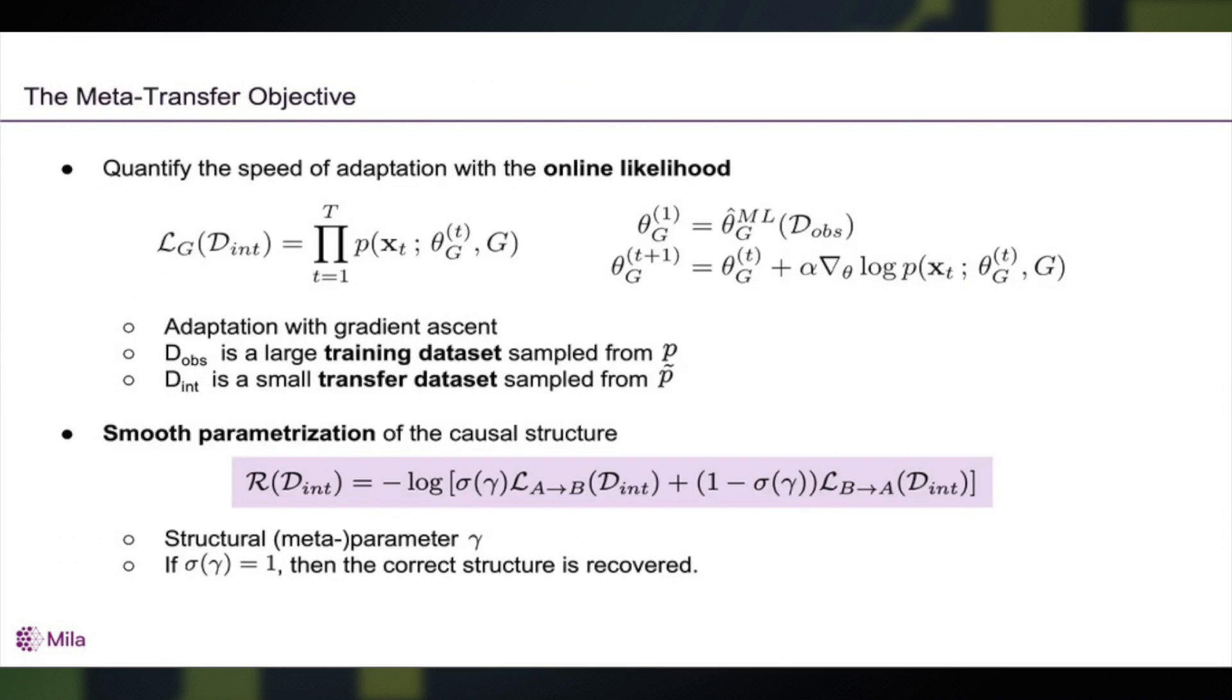So more precisely, we define a meta-learning objective that we're going to use to learn a belief in whether the correct answer is that A is the cause of B or B is the cause of A. And for each of the two models, we're going to measure an online likelihood, the L here, that measures the likelihood of new points as we do SGD after seeing each example.